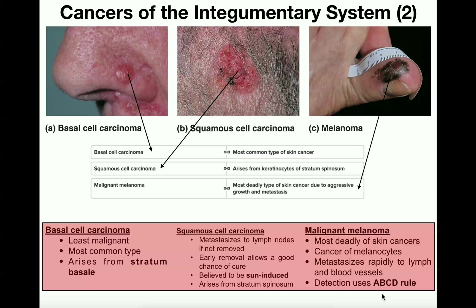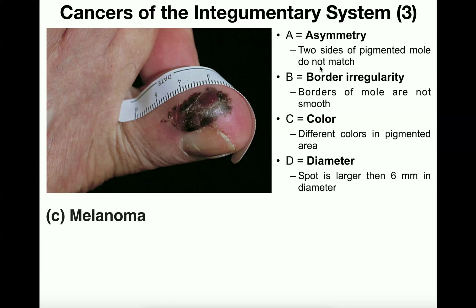Detecting a malignant melanoma is done using the ABCD rule. A stands for asymmetry — if the spot is asymmetric and the two sides of the mole do not match, it's very likely a malignant melanoma. B stands for border irregularity — the borders are not smooth. Looking at this image, you can see serrated edges and a spike that sticks out, showing definite border irregularity, which is more obvious than the asymmetry.